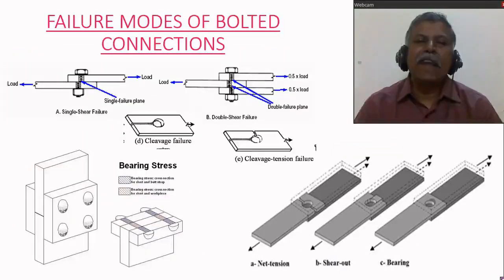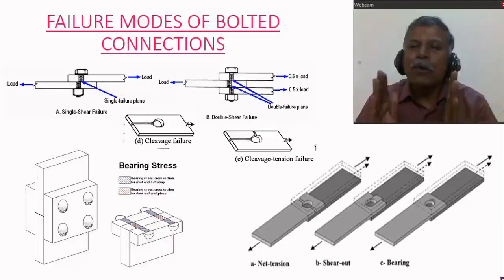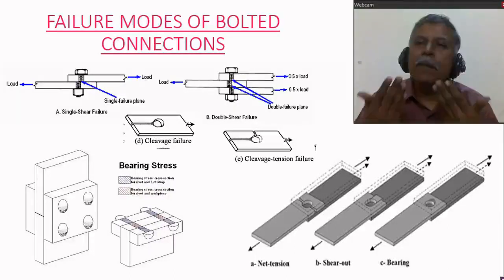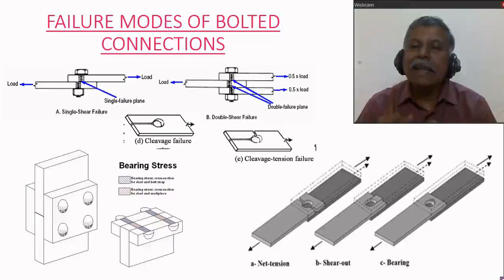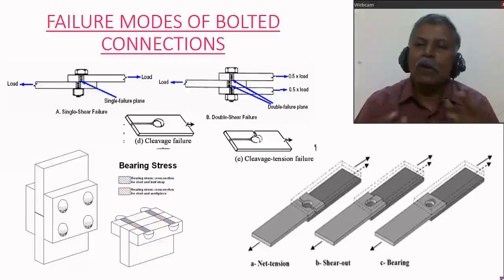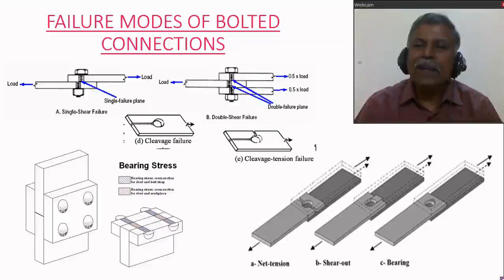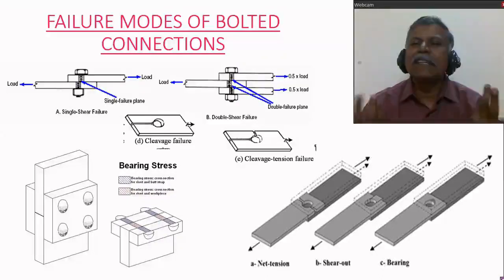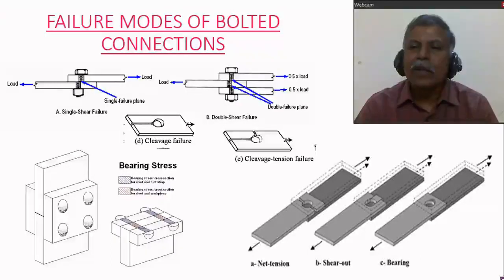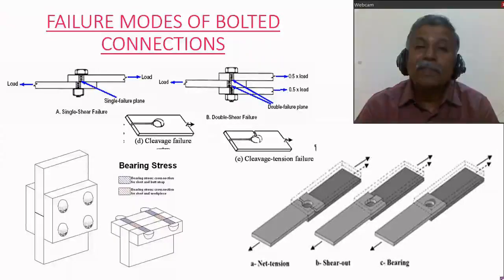We will now look at the different types of failure modes of bolted connections. When designing a bolted connection, the output is: how many bolts are needed, the diameter of the bolt, the grade of the bolt, and the pitch used. To calculate the number of bolts, we calculate the total load and the strength of one bolt. Total load divided by the strength of one bolt gives the number of bolts. The ultimate aim is therefore to find the strength of one bolt, which requires considering all possible failure modes of the bolted connections.